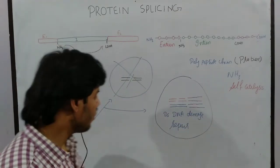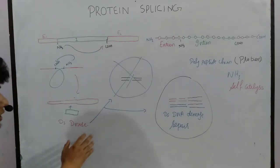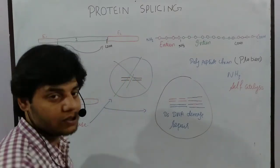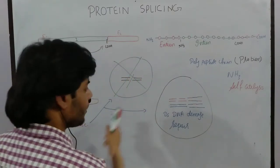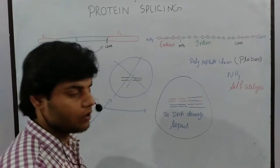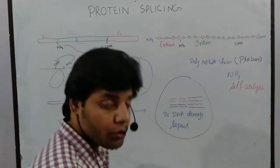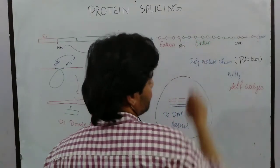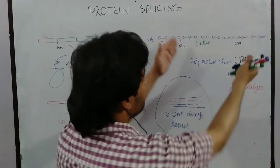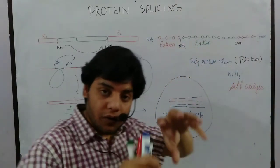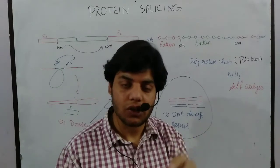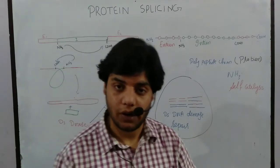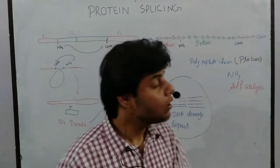In summary, if protein splicing occurs in a bacterial cell it will damage the bacteria, but in a eukaryotic cell it does not cause damage due to the DNA repair mechanism. Protein splicing is still very important because once the intein portion is removed, the extein portions connect and fold into a secondary structure, making the protein functional and usable by the cell for different purposes.